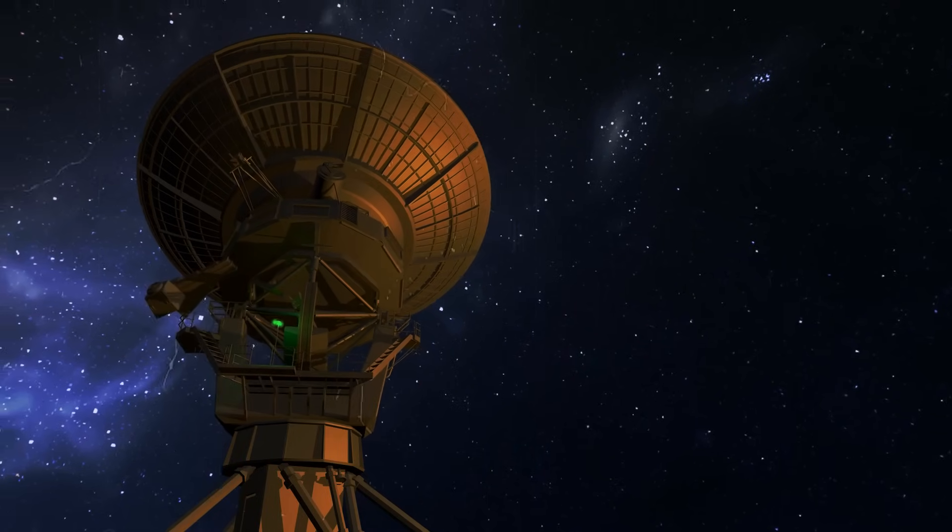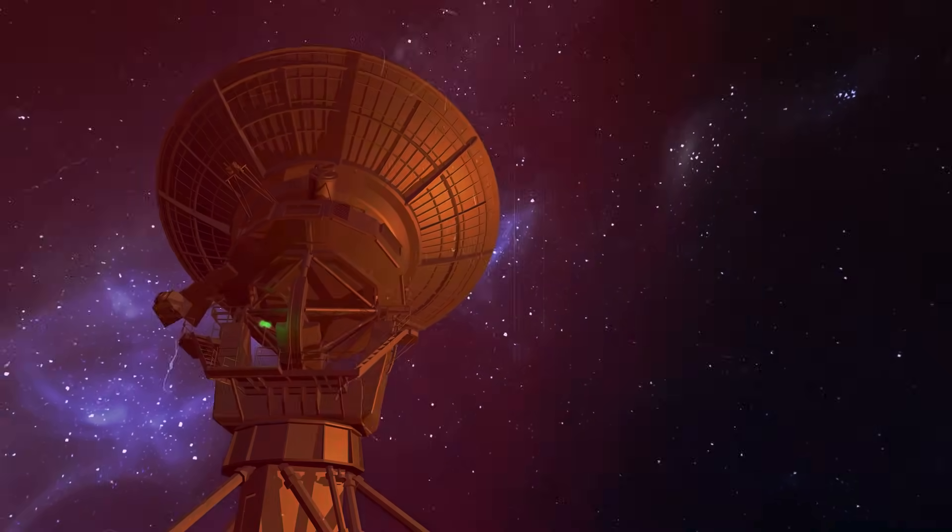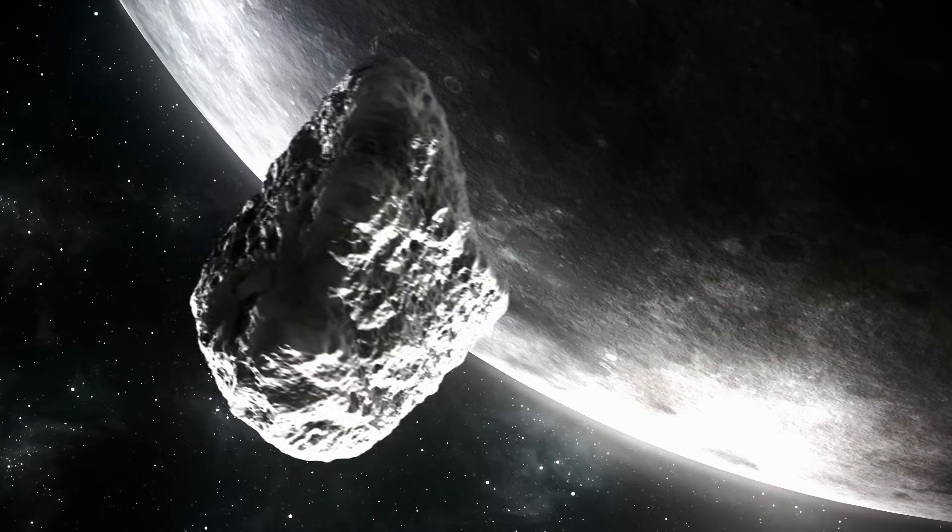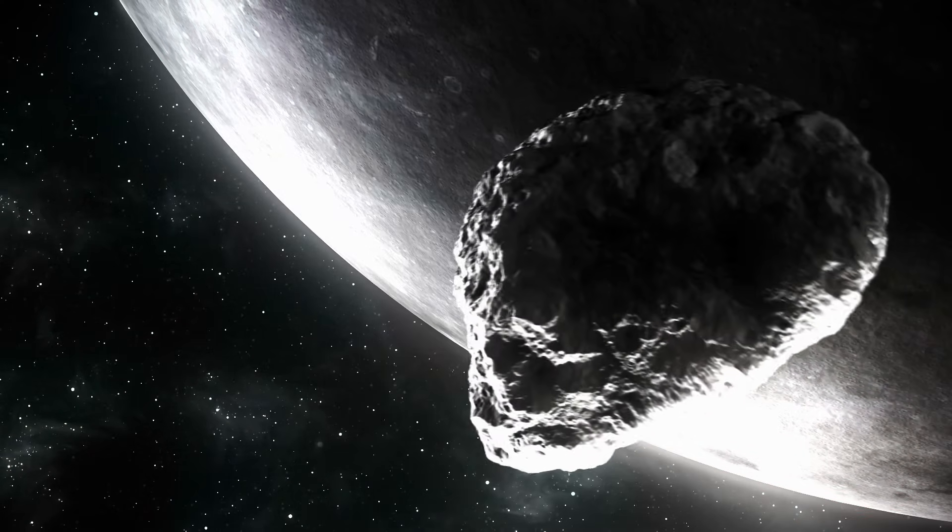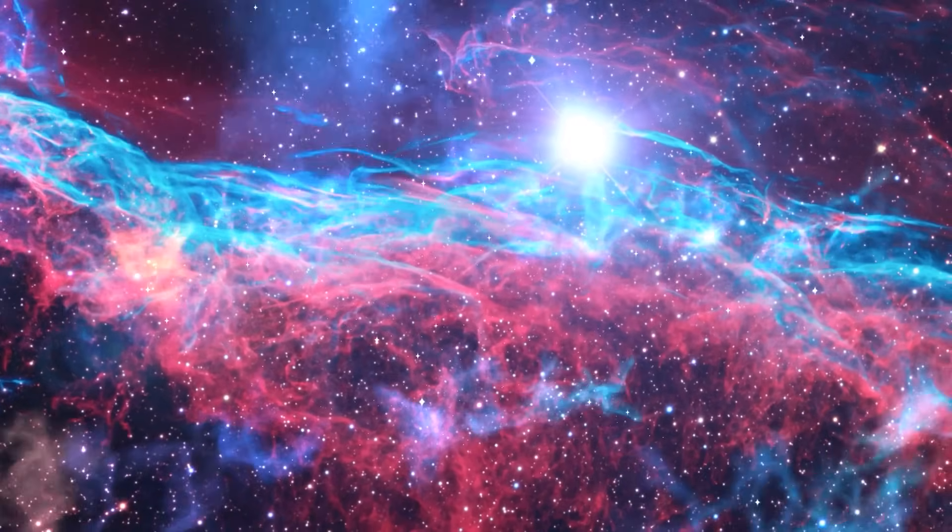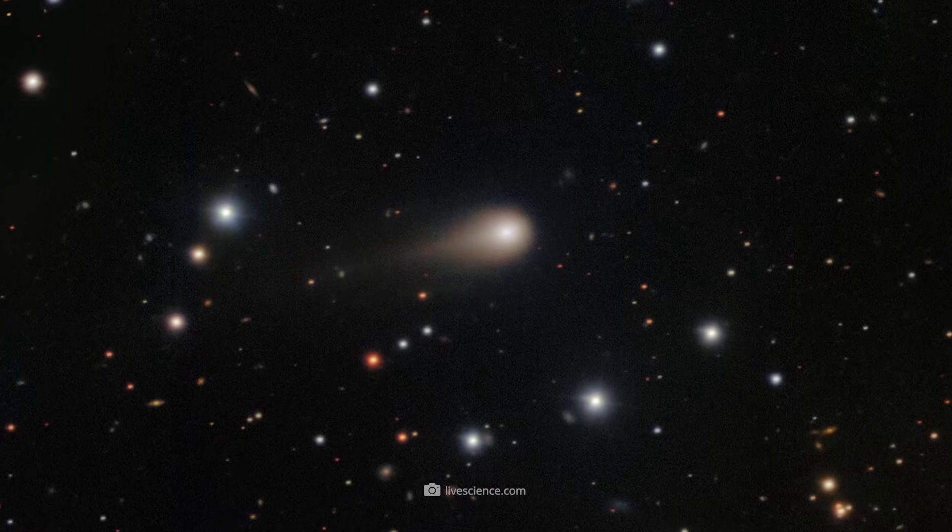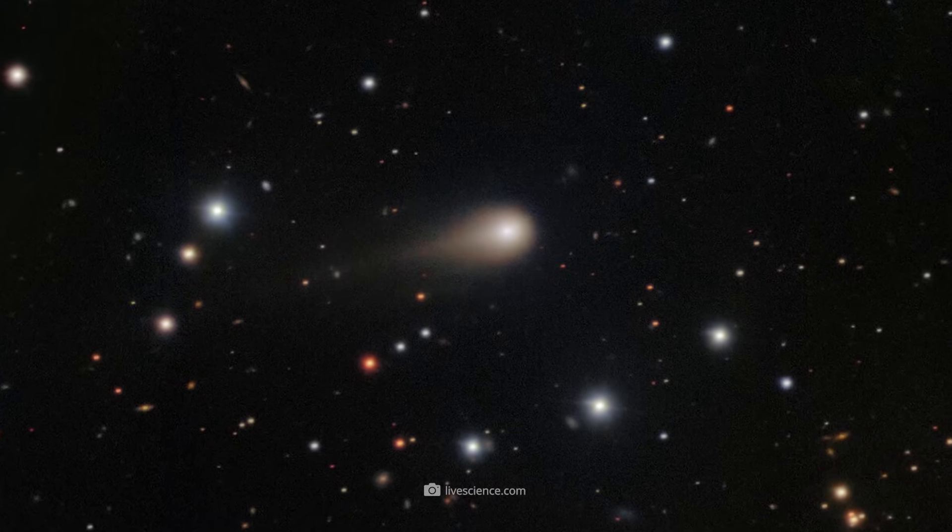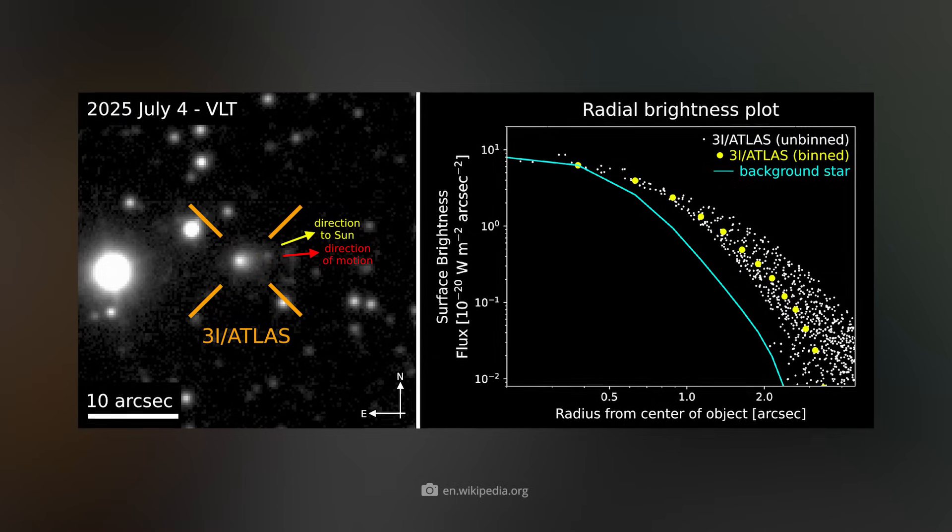The orbital data was particularly exciting. Unlike normal comets, which have elliptical orbits, 3i Atlas follows a hyperbolic orbit. That is, it comes in, is accelerated by the sun, and then disappears back into interstellar space forever. Its eccentricity of 6.13 is so high that the orbit appears almost like a straight line.